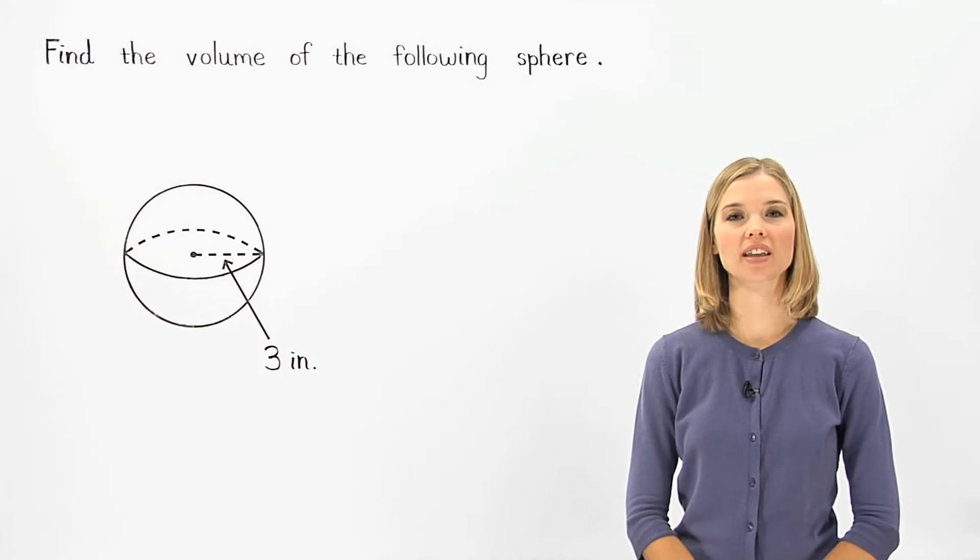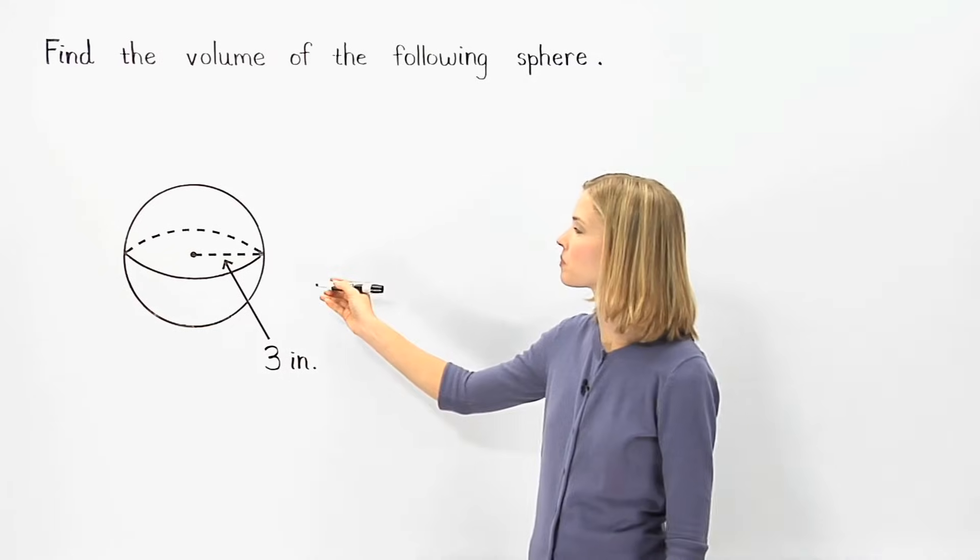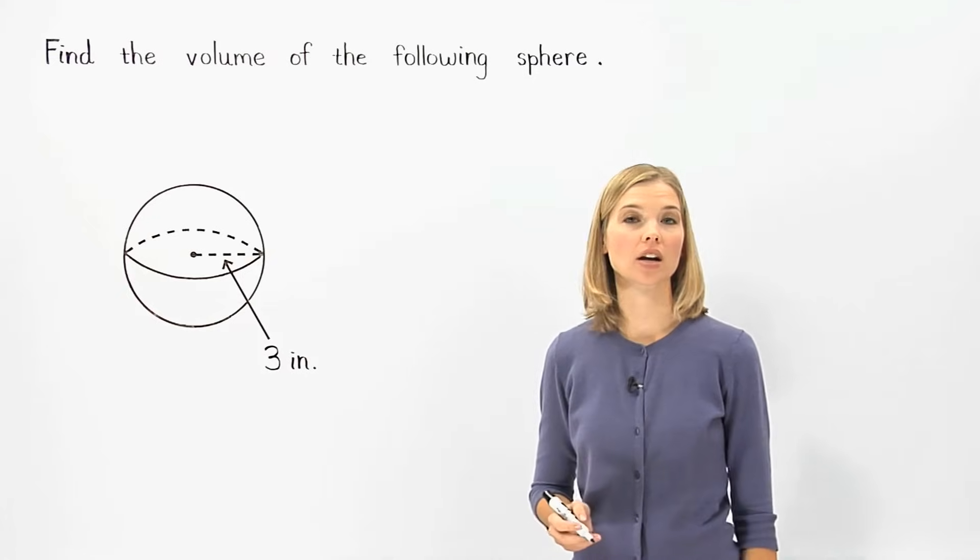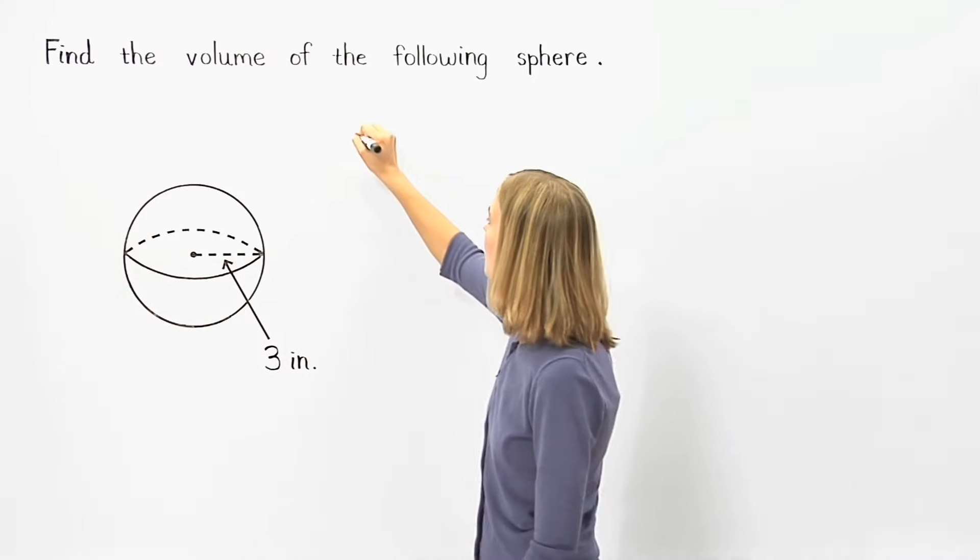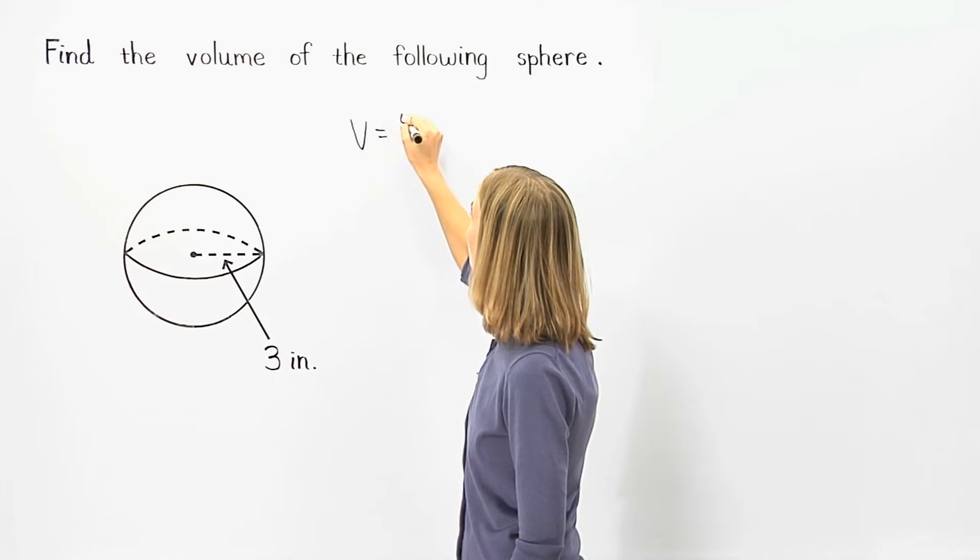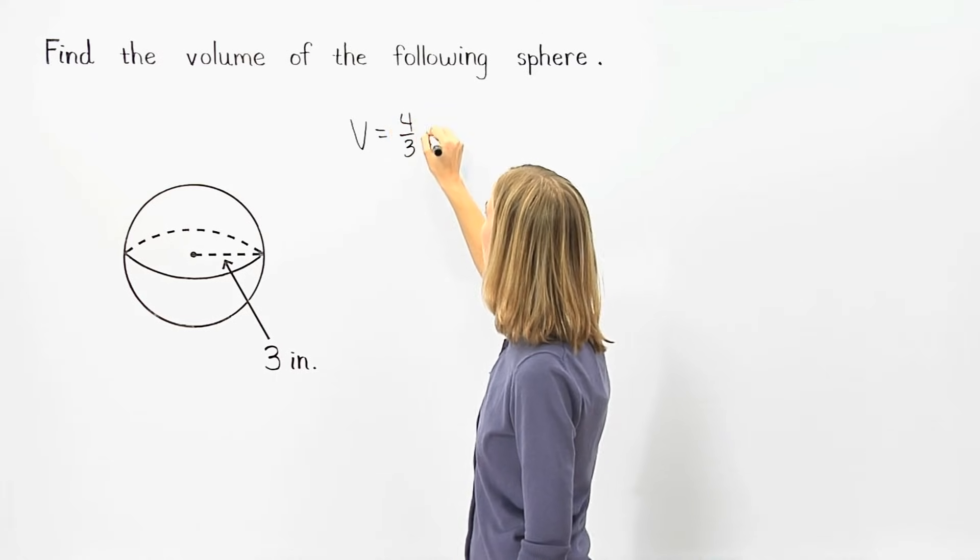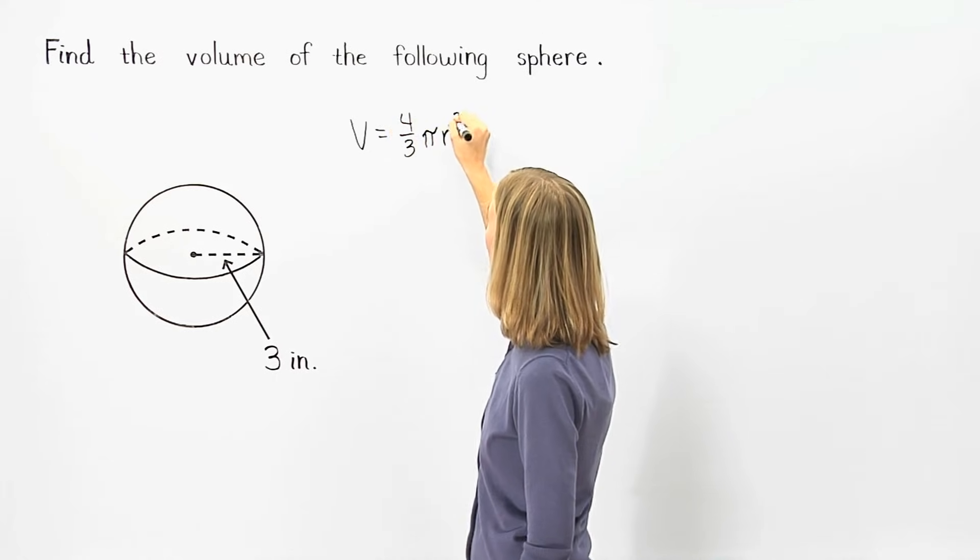In this example, we're asked to find the volume of the given sphere. To find the volume of a sphere, we use the formula: volume equals four-thirds times pi times radius cubed.